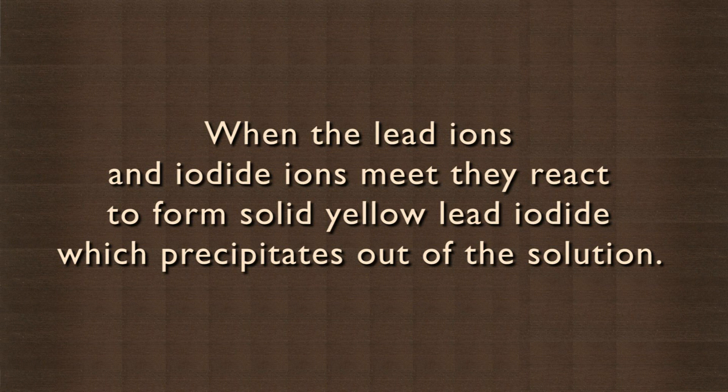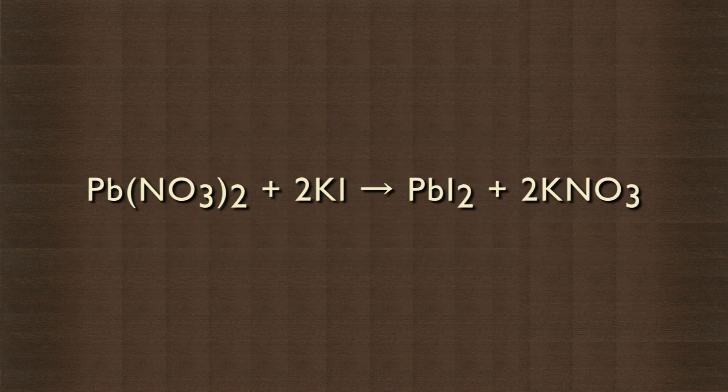When the lead ions and iodide ions meet, they react to form solid yellow lead iodide which precipitates out of the solution. Pb(NO₃)₂ + 2KI → PbI₂ + 2KNO₃.